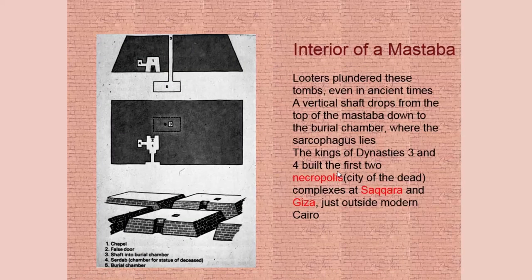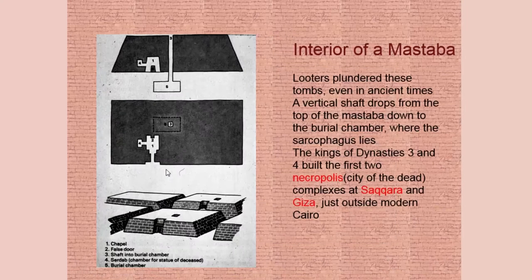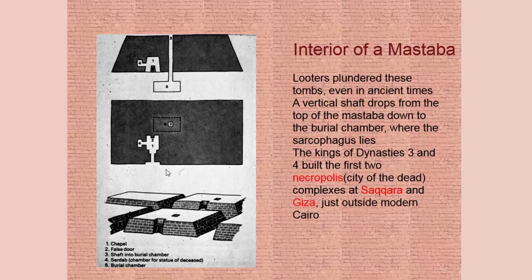This picture shows the inside of a mastaba. You can see a door opening on the right-hand side and another one to the left. They would usually have a false door with a false chamber, hoping looters would go there and not find the actual chamber where the valuables were. There's a vertical shaft that drops from the top of the mastaba down to the burial chamber where they put the sarcophagus.